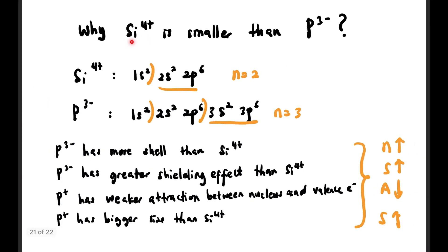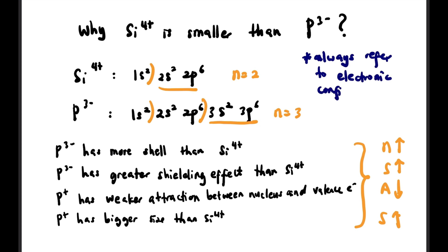In general, cations are smaller than anions. Let's look at why Si⁴⁺ is smaller than P³⁻. For Si⁴⁺, n = 2, while for P³⁻, n = 3. So P³⁻ has more shells than Si⁴⁺. More shells → greater shielding effect → weaker attraction between nucleus and valence electron → bigger size. That's why P³⁻ is bigger than Si⁴⁺. We use the NSAS factor here.